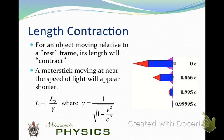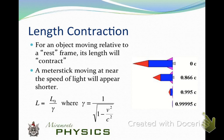Length contraction: for an object moving relative to a rest frame, its length will contract — the distance gets shorter. At 0.86c a rocket ship is much smaller; at 0.995c it's tiny. The contraction is only in the direction of motion — width doesn't change. A meter stick moving near the speed of light will appear shorter. The formula is L = L₀/γ — gamma is in the denominator, so length gets smaller, opposite to what happened with time.